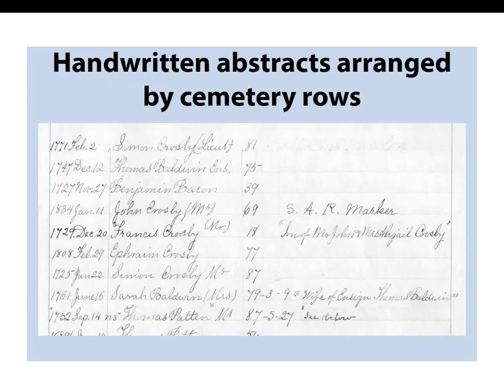Sometimes you get handwritten abstracts arranged by cemetery rows, where somebody went grave by grave and wrote down an abbreviated version of what was there, or maybe a sidebar note. In the case of Lieutenant Simon Crosby, he was 81 years old when he died on the 2nd of February 1771. The next persons give dates of 1747 and 1727. Jumping ahead nearly 107 years, there is a John Crosby, age 69, with an SAR marker on it — maybe they were a member of the Revolutionary War, or maybe the marker was placed incorrectly. This person took the extra effort of abbreviating details and noting little clues, such as that Francis Crosby is the son of Mr. John and Mrs. Abigail Crosby — which could be on the stone or a genealogical fact the person happened to know.